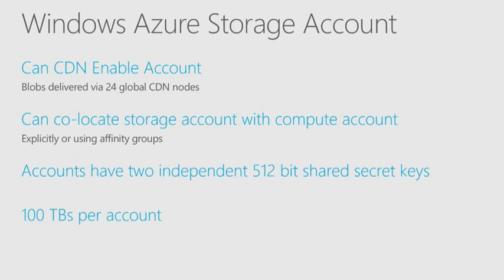I can go ahead and content delivery network enable that storage. Now the content delivery network is currently being retooled a little bit, so you can't sign up for that right now. But there are 24 edge nodes that are out there. You can distribute that content - it's very fast, very efficient, and locates that all around the globe. You can co-locate your storage with your compute using either affinity groups or just by naming the data center.